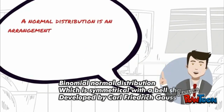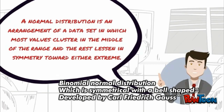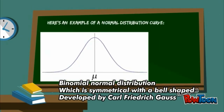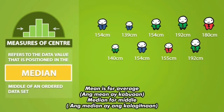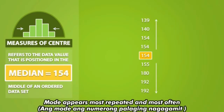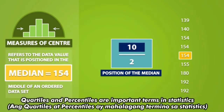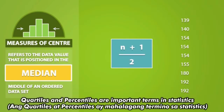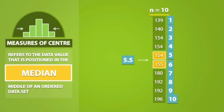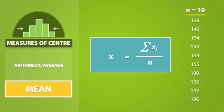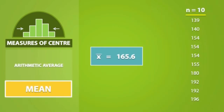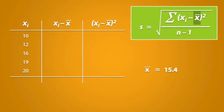Normal distribution is symmetrical with the bell shape, developed by Carl Friedrich Gauss. Mean for average, median for middle, mode appears most often — mean, median, mode, and percentile are important terms in statistics. Dear number theorist, please remember these. Thank you.